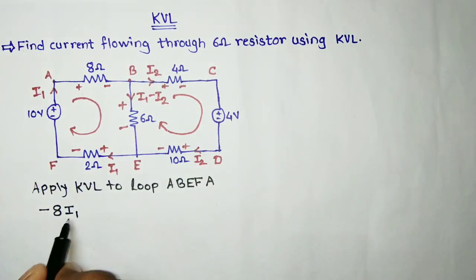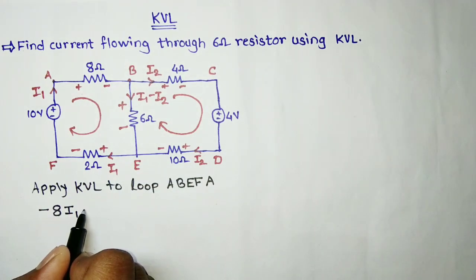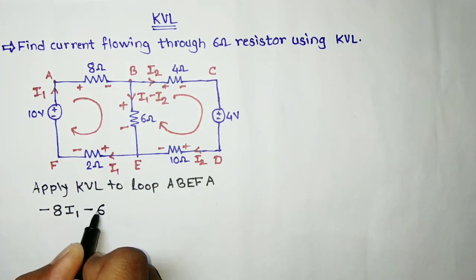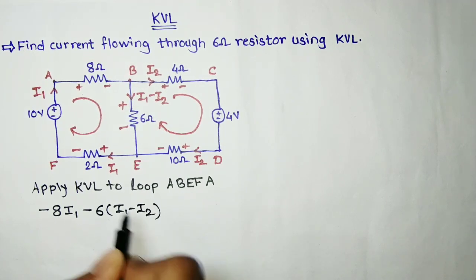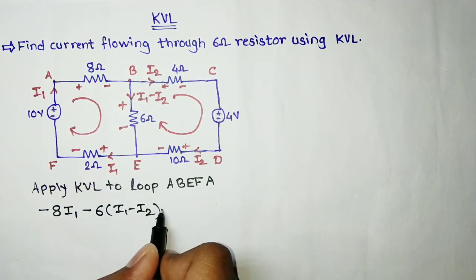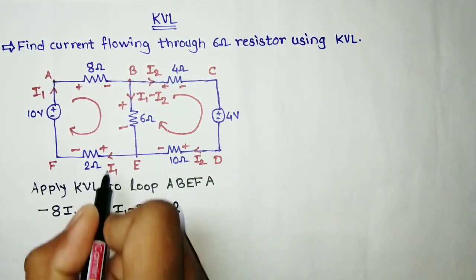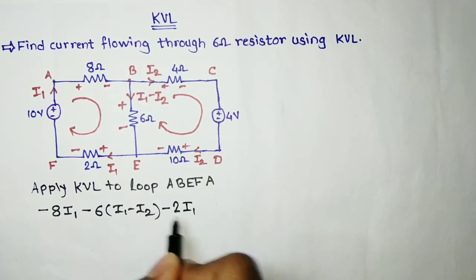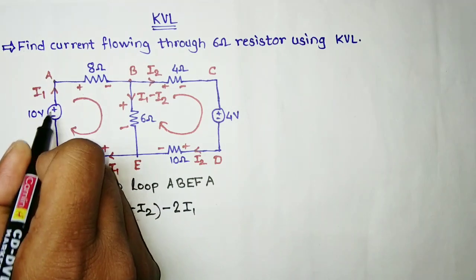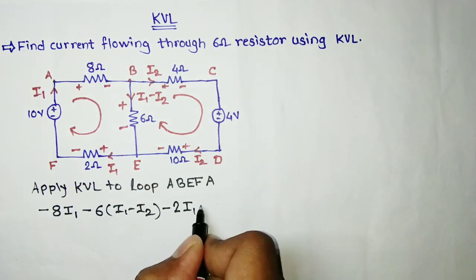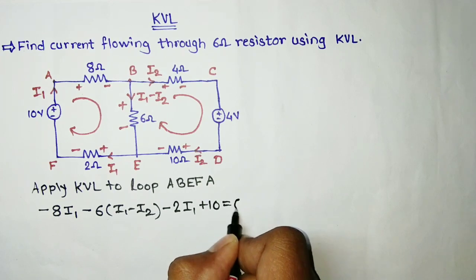So: minus 8 times I1. The second sign for the 6-ohm is again negative, so minus 6 times the current flowing, which is I1 minus I2. The second sign for the 2-ohm is negative, so minus 2 times I1. Moving from F to A, the second sign is positive, so plus 10, equals 0.